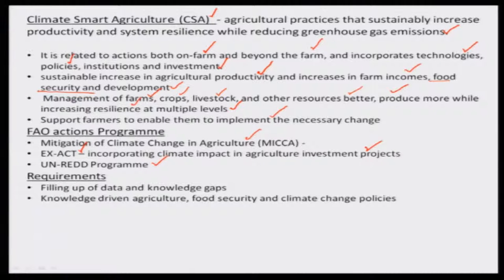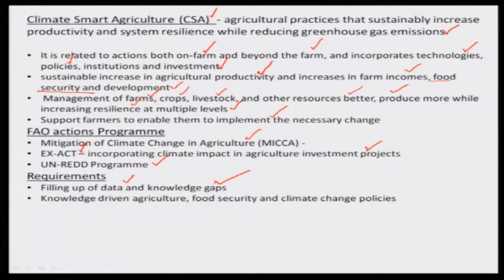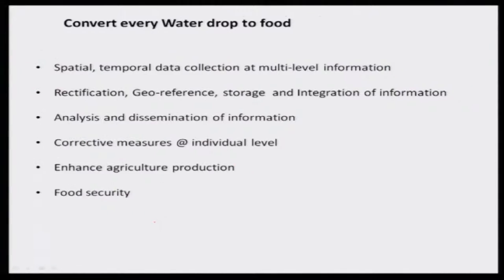What is needed for a farmer? You may have to identify all the gaps: what data is missing, what type of knowledge is missing — like understanding policies and executing them at your level. That is what is meant by knowledge gaps. Agriculture is driven by knowledge — not only your own knowledge, but knowledge and experience gained by other people — so that climate change policies can also be incorporated in these activities.